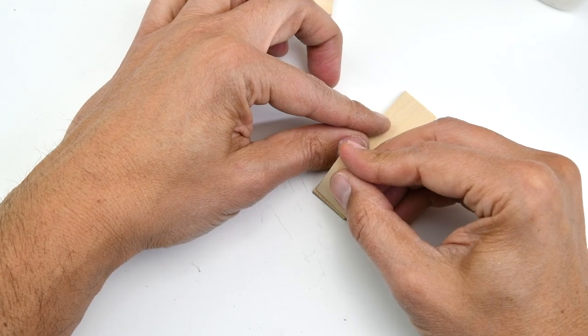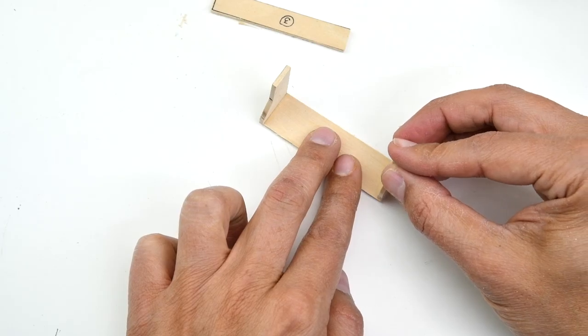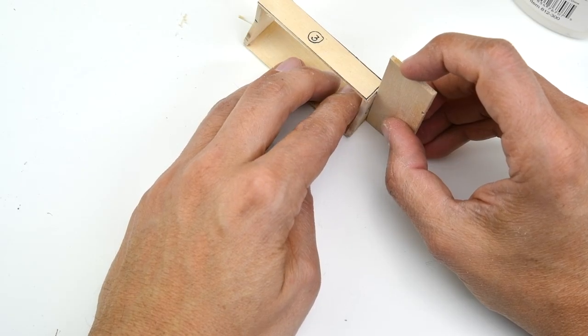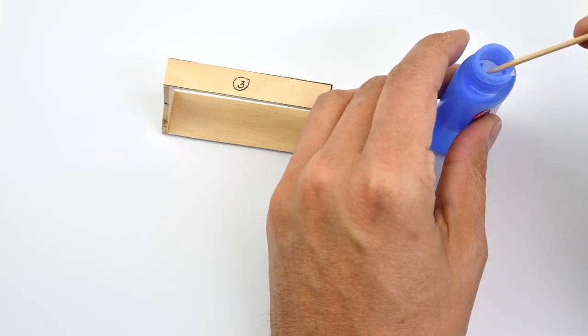Glue the pieces together according to the assembly instructions on page 2. First with white or PVA glue and then with CA glue to secure a stronger bond.